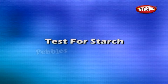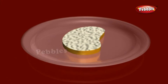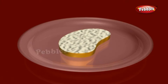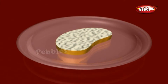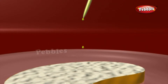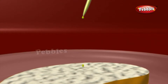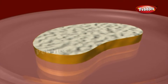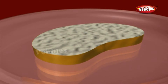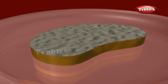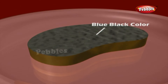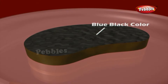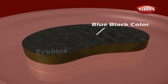Test for Starch: Take a small quantity of a food item or raw ingredient. Put 2–3 drops of dilute iodine solution on it. Observe if there is any change in the color of the food item. Did it turn blue-black? A blue-black color indicates that it contains starch.